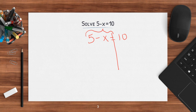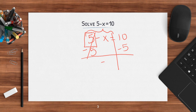So if I have 5 minus x, what's not x is 5. That 5 right now — if I'm just looking at the 5 — that 5 is positive. The opposite of positive would be negative, so I'm going to start by subtracting 5 on both sides. When I do that, 5 minus 5 cancels out. So on this side I have negative x equals — what is 10 minus 5? That's 5. Now, this tells me what negative x equals. It does not tell me what x equals.